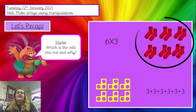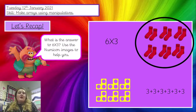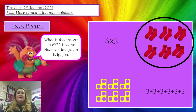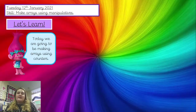Well done if you said this one. This one is the odd one out because there are six groups of two and not six groups of three. So we have got twelve socks there. What would the answer be to six times three? You can use the numbers on the screen to help you count. I would like you to write six times three equals into your book and write the answer at the end. Pause the video if you need more time, then let's start our lesson.